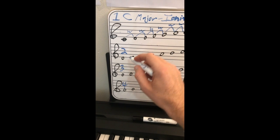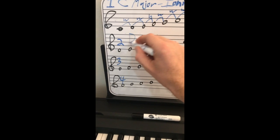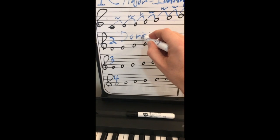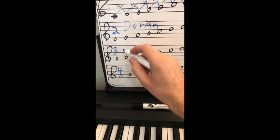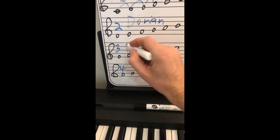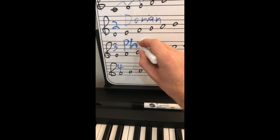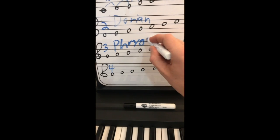When you start on the second degree of a major scale, it's called Dorian. When you start on the third degree, it's called Phrygian: P-H-R-Y-G-I-A-N.